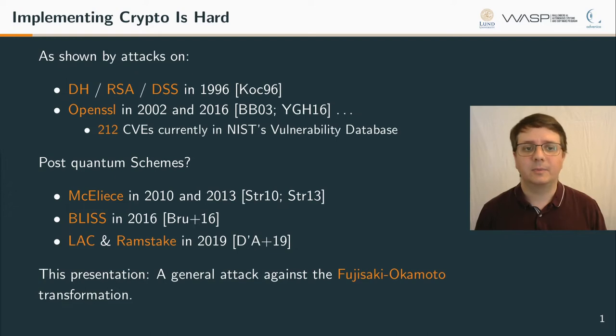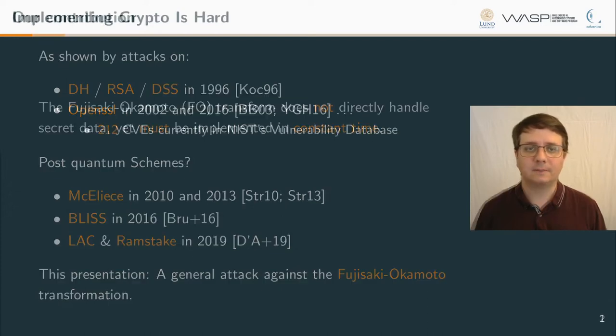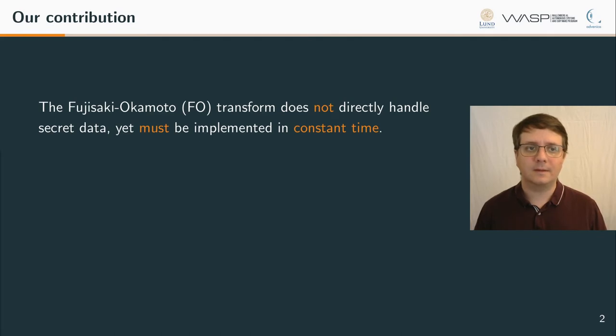But what about post-quantum schemes? Well yes, we have those as well. For example against Ntru in 2010 and 2013 and against Bliss in 2016. And the most recent attack is against LAKE and Ramstake that exploited the timing variations when executing the error correcting codes that these schemes employ to reduce the decoding failure rate. The authors showed that the attack could be generalized to cover any scheme which inherently employ error correcting codes which are not implemented in constant time manner.